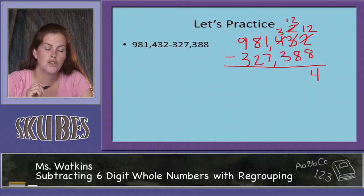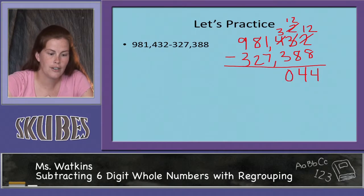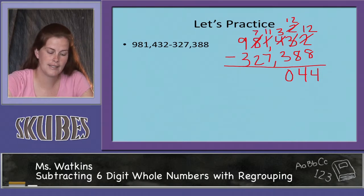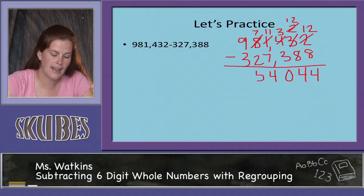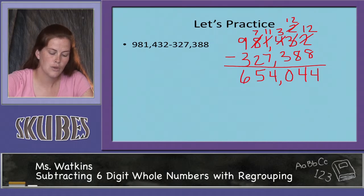12 minus 8 equals 4. We have 3 minus 3 equals 0. Looking at our thousands place, we need to regroup again: our 8 becomes a 7 and our 1 becomes an 11. 11 minus 7 equals 4, 7 minus 2 equals 5, and 9 minus 3 equals 6. So our answer is 654,044.